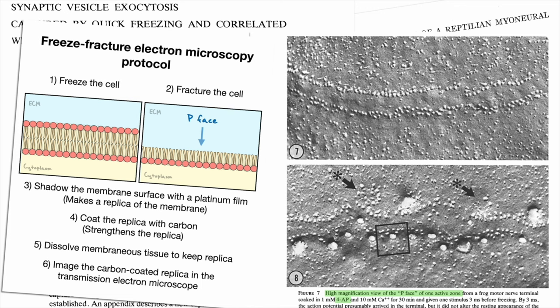In these electron micrographs, you can directly see the P-face of the presynaptic motor nerve. In the first image, the first panel corresponds to a quick frozen control.